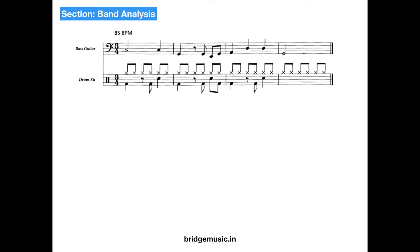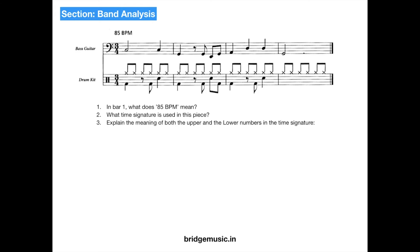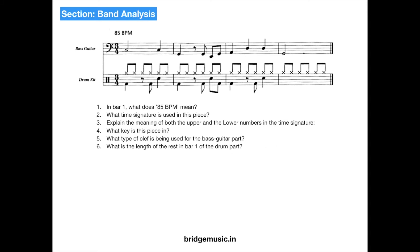Another passage for the bass guitar and the drum kit. In bar 1, what does 85 BPM mean? 85 BPM means 85 beats per minute. What time signature is used? The time signature is 3/4, meaning 3 quarter note beats in a bar. The upper number is the number of beats in a bar and the lower number gives the time value of 1 beat. What key is this piece in? There is no key signature, so it's in C major. What type of clef is used for the bass guitar? It's the bass clef. What is the length of the rest in bar 1 of the drum part? That is an eighth note rest.